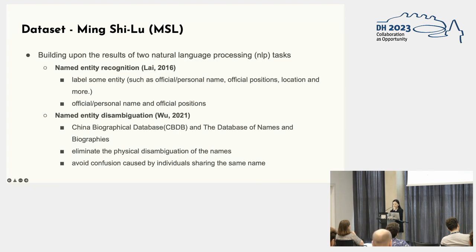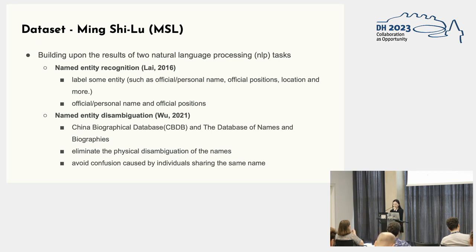Our data has already been processed using NLP techniques — named entity recognition (NER) and named entity linking (NEL) — which were developed by our research team previously. NER involves identifying entities such as personal names, official positions, and locations within the text. For this study, we focus on extracting named entities related to personal names and official positions. By utilizing NEL with CBDB, the database of names and biographies, our team established connections between named entities in the text and biographical information, enabling accurate identification of individuals and overcoming challenges posed by name ambiguity.